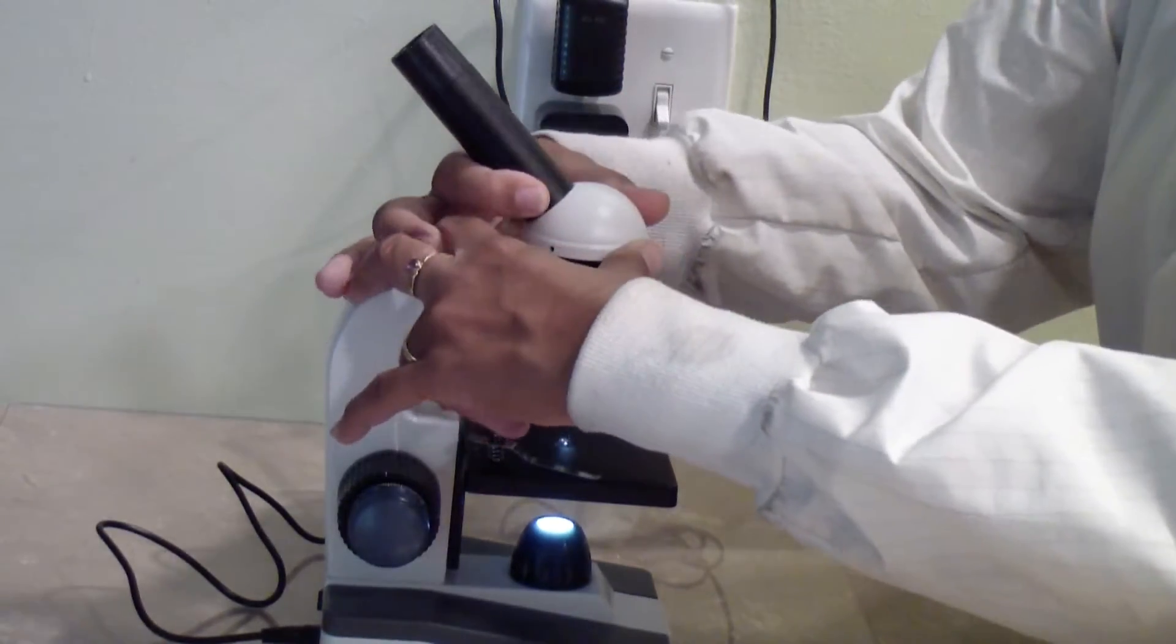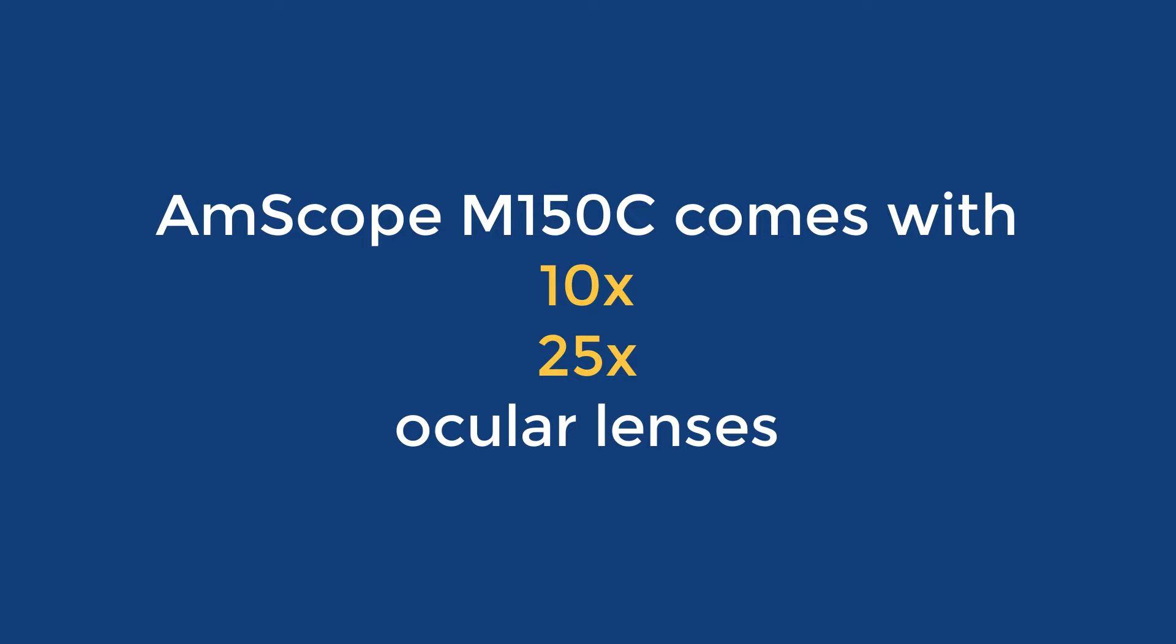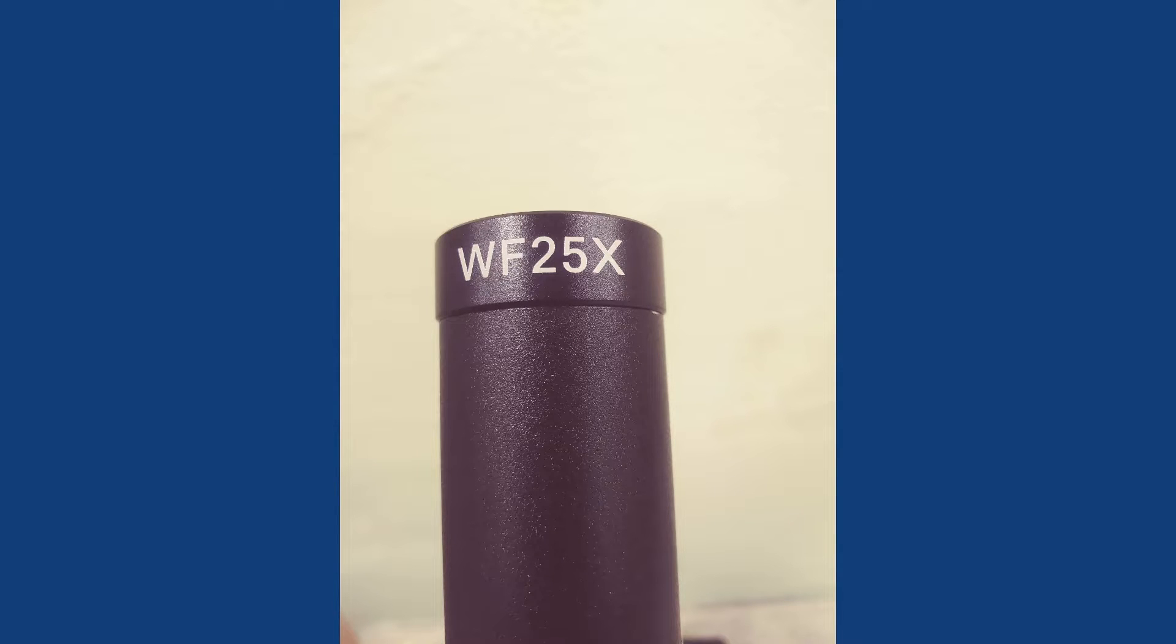The ocular tube can be turned around for your convenience. The microscope comes with a 10x and a 25x ocular lens. For most of our activities, you will use the 25x lens.